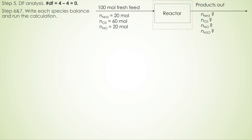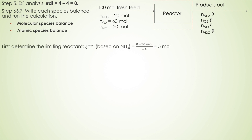Then we can write down the species balance. There are two ways to write the species balance: molecular species balance and atomic species balance. Before writing the species balance, let's determine the limiting reactant using the extent of reaction.